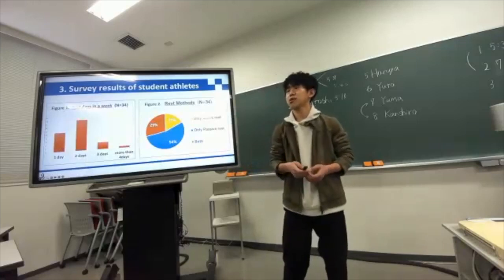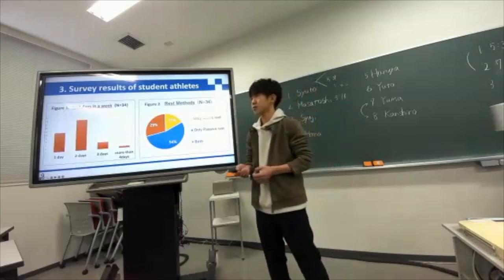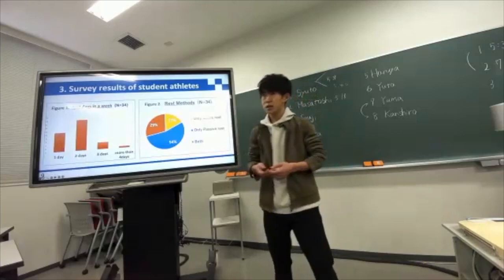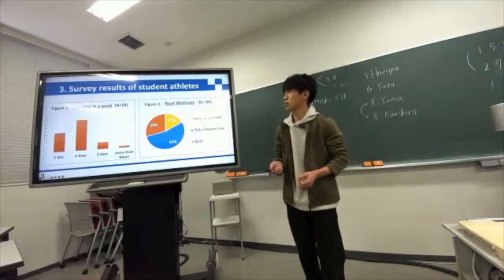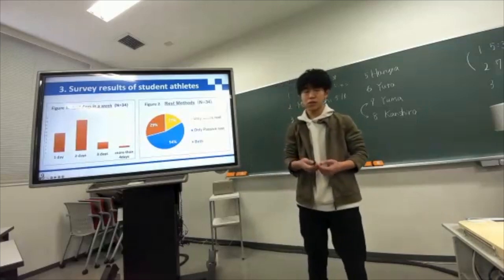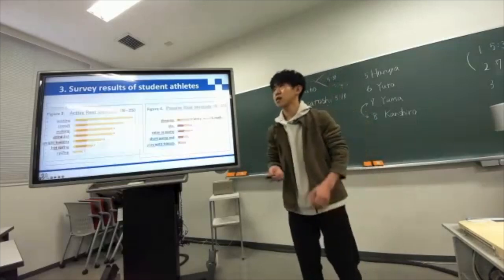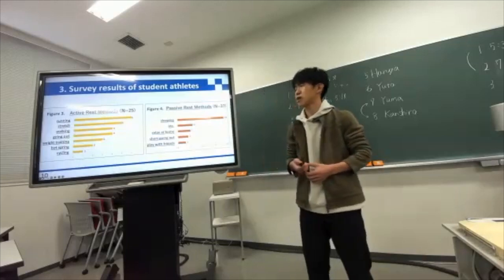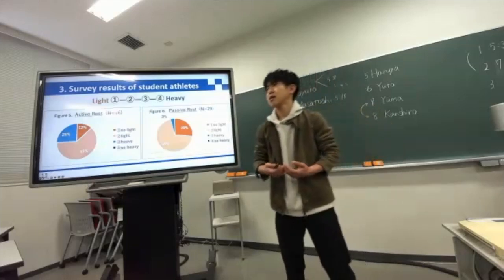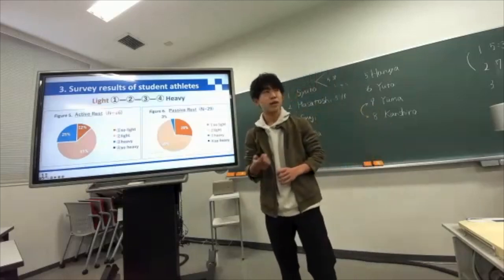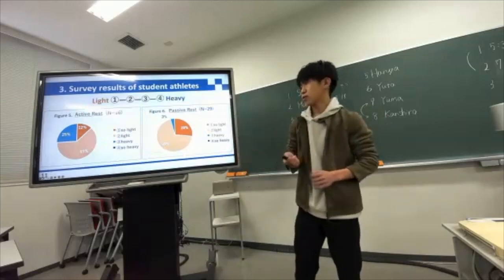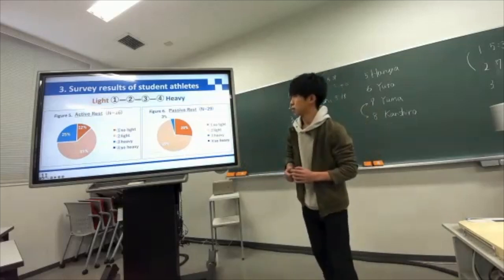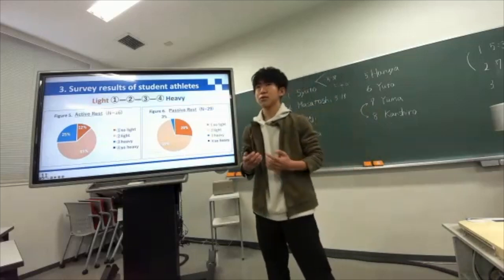Next, I surveyed 34 student athletes about how they rest on rest days. Regarding rest days in a week, over half of people had two days, followed by one day. Regarding rest methods, only active rest was 78%, only passive rest was 54%, and both were 29%. A lot of active rest methods were running and stretching, and most passive rest methods were sleeping. Regarding active rest, 75% of people felt their fatigue was sufficiently relieved, while for passive rest, 97% felt their fatigue was sufficiently relieved.